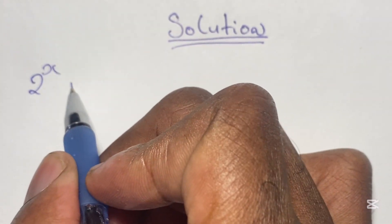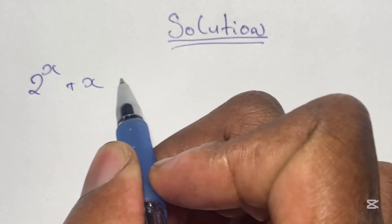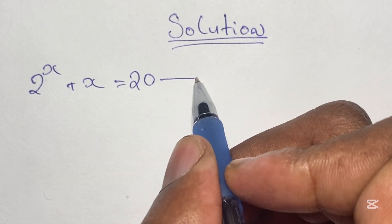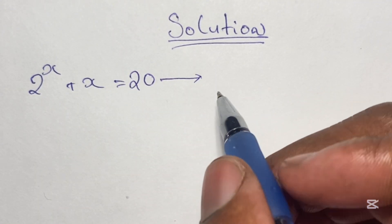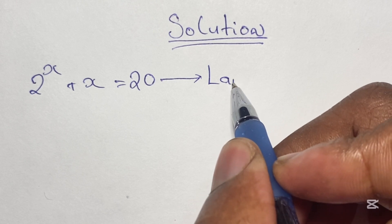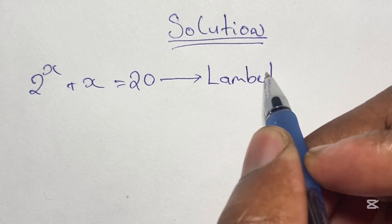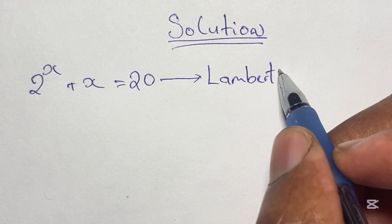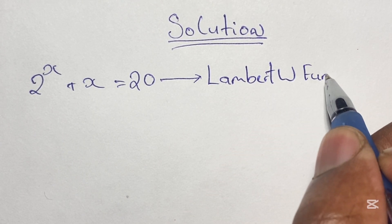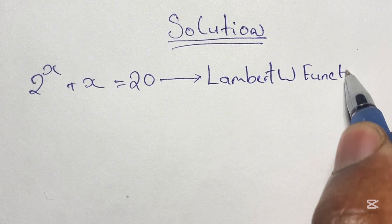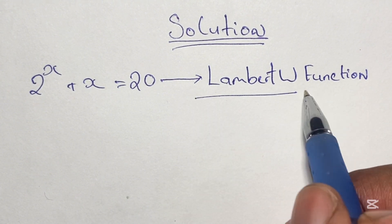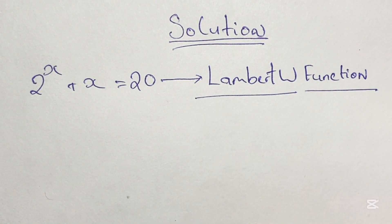To solve these kinds of equations, normally we wouldn't use regular algebraic methods to arrive at our solutions. In this lesson I will introduce you to what we call the Lambert W function. This method is used to solve equations where the variable is in the base and also in the exponent.